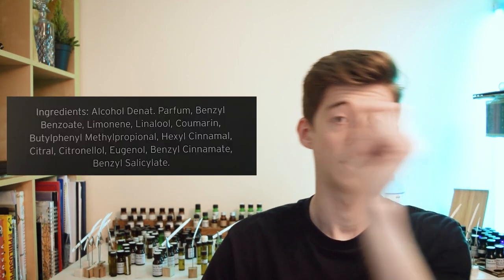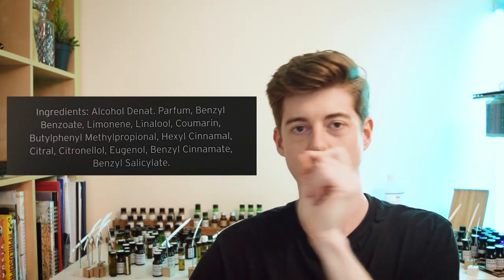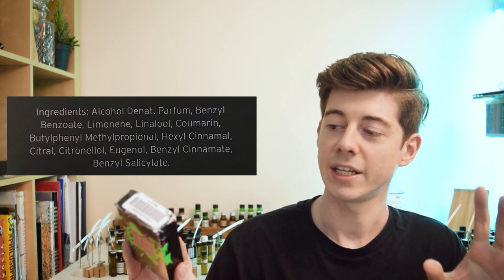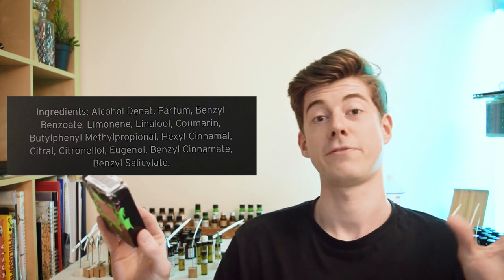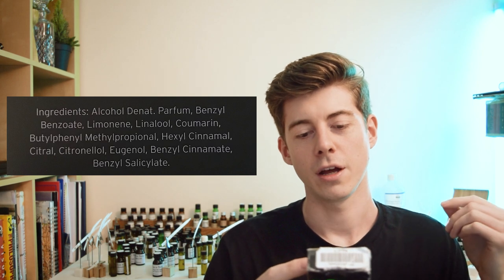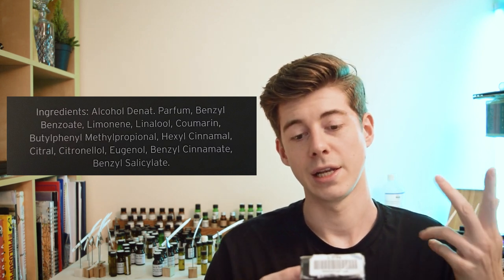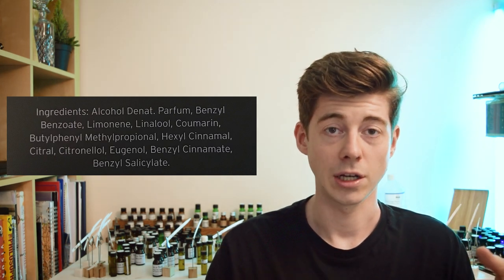If you've looked at the box of a perfume before, you might notice that it says 'ingredients' and then gives you a list of various things. It will usually start off with something like alcohol denat, then it will usually say parfum, and after that there are a lot of chemical names — things like benzyl benzoate, limonene, linalool, coumarin, citral, citronellol. If you've been watching my videos on perfumery, you'll know that some of those, like eugenol and citronellol, are raw materials that you may put inside your perfume.